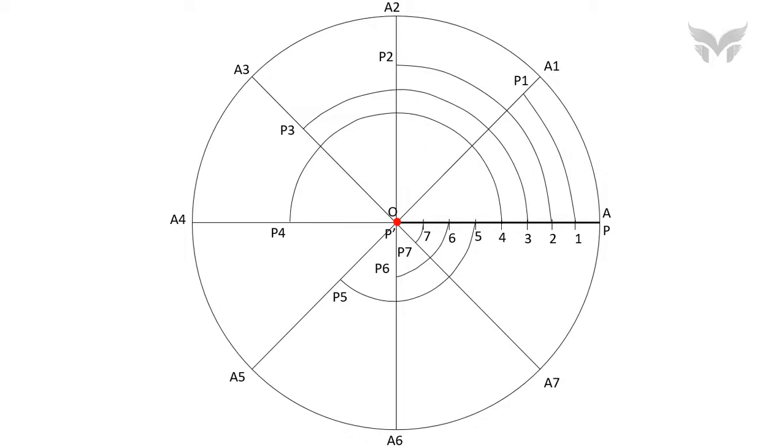Now it's time to connect all the points from P to P1, P2, P3 up to P dash. And here we have our spiral. Finally, name the curve as Archimedean spiral.